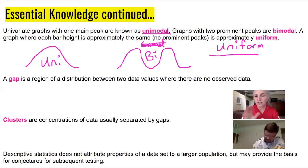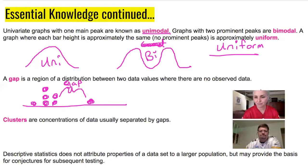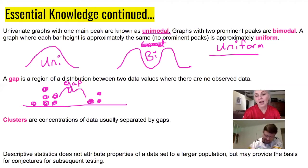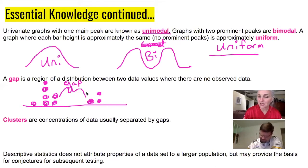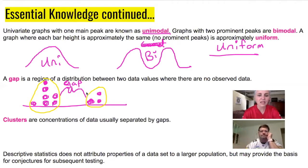Once you determine a basic shape, look for places where data is missing. That region of no data is called a gap. We also have what are called clusters. When you've got a group of data points together separate from a different group, that's a cluster. When there's just one isolated point, it's potentially an outlier.